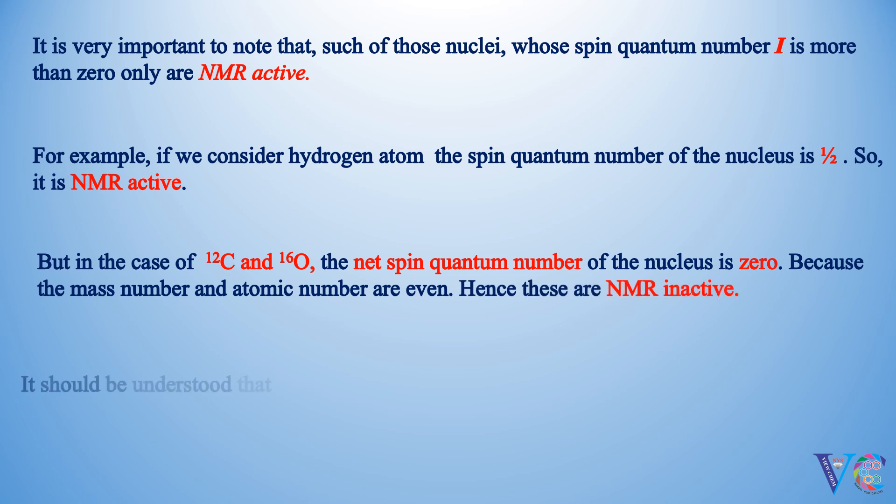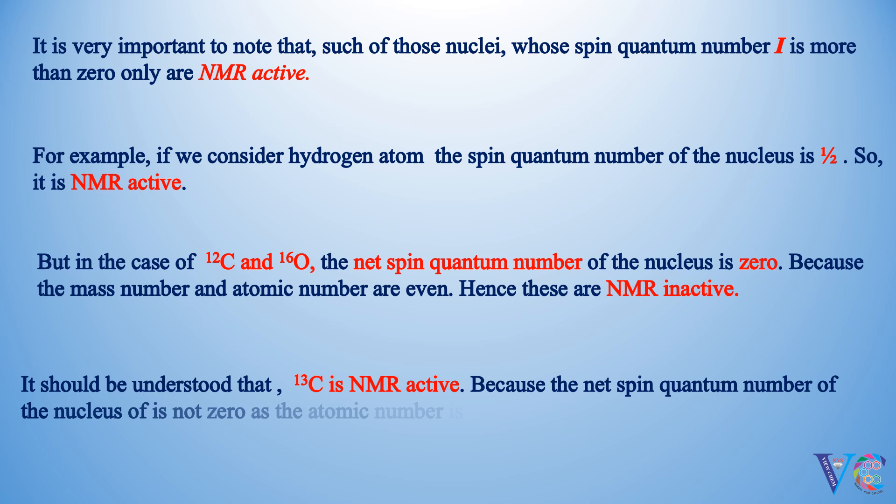It should be understood that 13C is NMR active, because the net spin quantum number of the nucleus is not 0, as the atomic number is even and the mass number is odd.